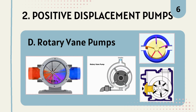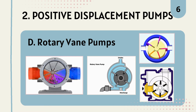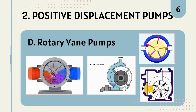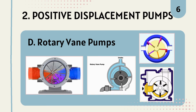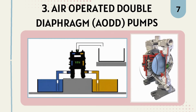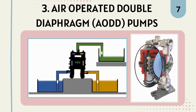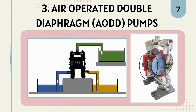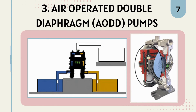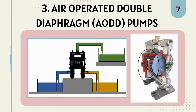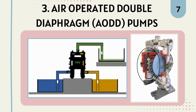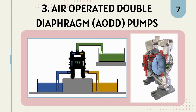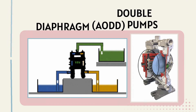Those were the two main and most commonly used types of pumps: centrifugal pumps and positive displacement pumps. Now we will discuss some other types of pumps also used in industries. The next type is the air-operated double diaphragm pump, commonly known as the AODD pump. This pump uses compressed air to alternate the movement of two diaphragms, creating suction and discharge strokes. AODD pumps are suitable for handling corrosive, abrasive, and viscous fluids and are widely used in chemical industries.